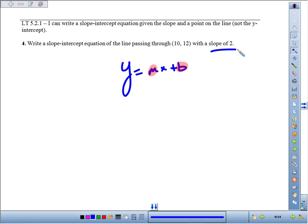The nice thing is they already told us our slope, so we know the equation's going to start y equals 2x. What we don't know is that b value, the y-intercept.